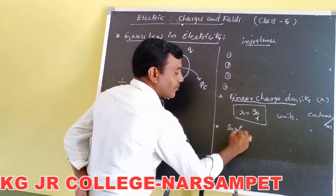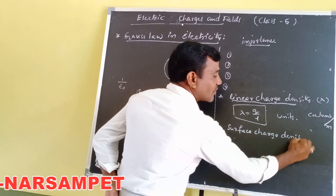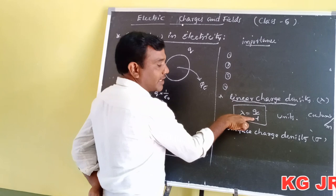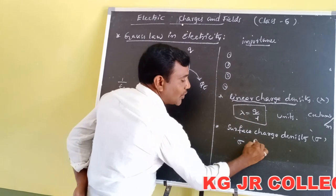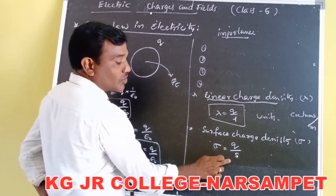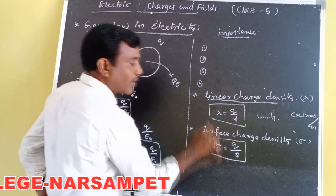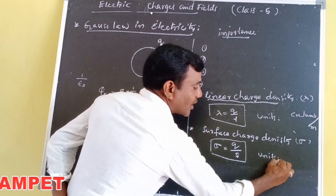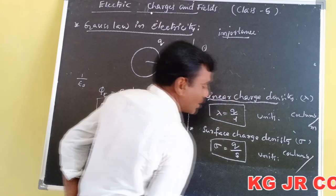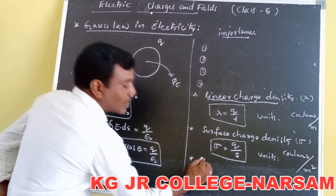The second definition is surface charge density. The charge per unit surface area of a conductor is known as surface charge density, denoted by sigma (σ). Then σ = Q/S. The unit of surface charge density is coulombs per meter squared (C/m²).